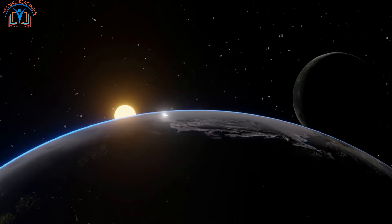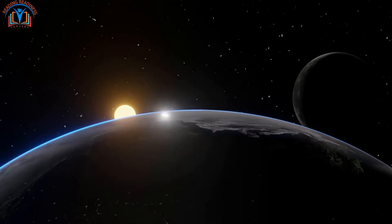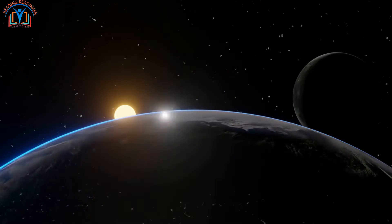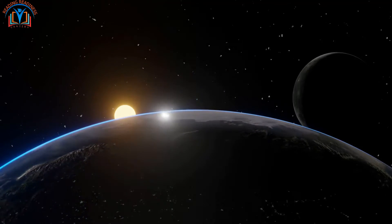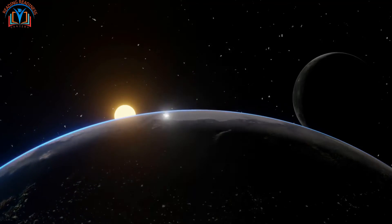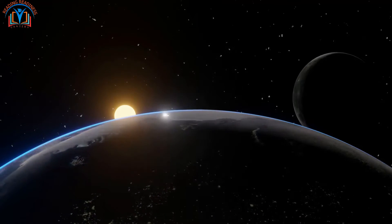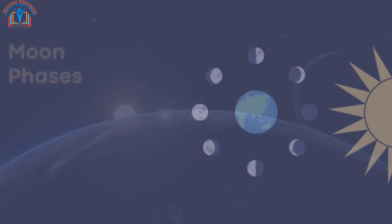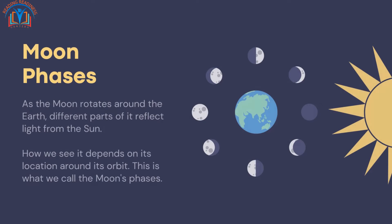As the moon rotates around the Earth, different parts of it reflect light from the sun. How we see it depends on its location along its orbit. This is what we call the moon's phases.